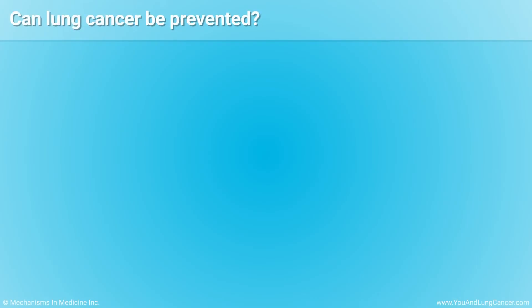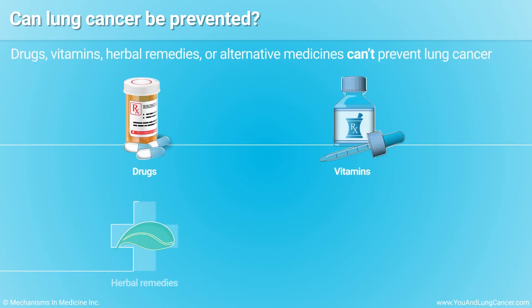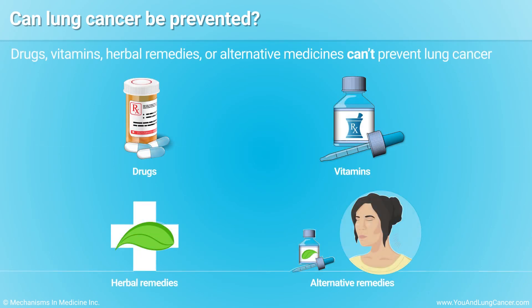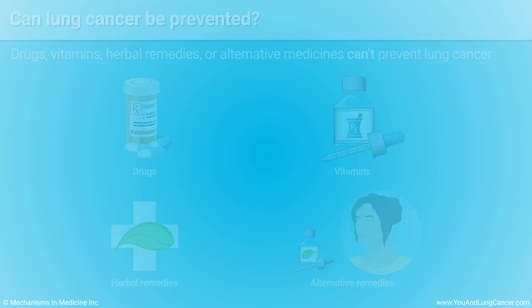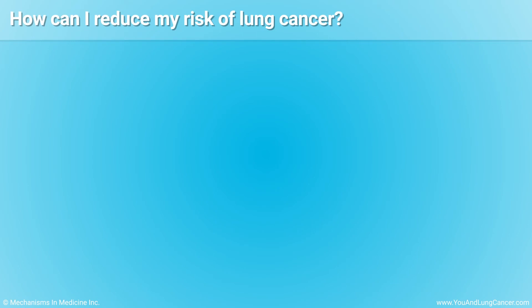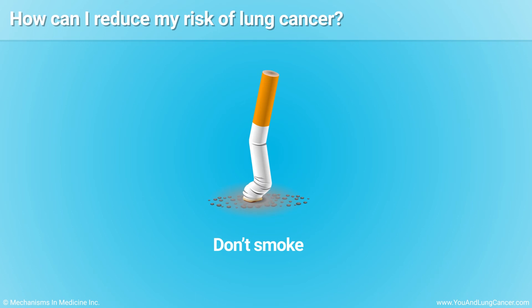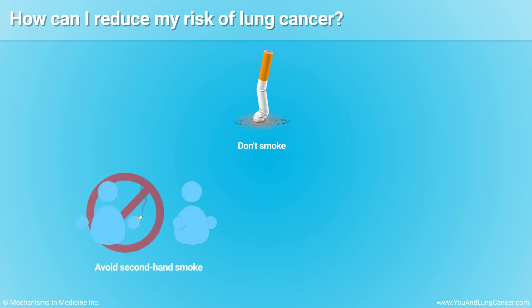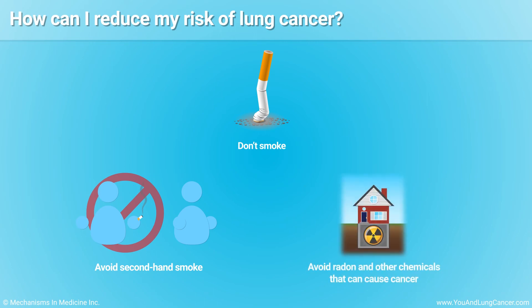Researchers haven't found any drugs, vitamins, herbal remedies, or alternative medicines that can help prevent lung cancer. There are things you can do to lower your risk. The most important thing is: don't smoke cigarettes, cigars, and pipes. Other things you can do: avoid secondhand smoke, and avoid radon and other chemicals that can cause cancer.